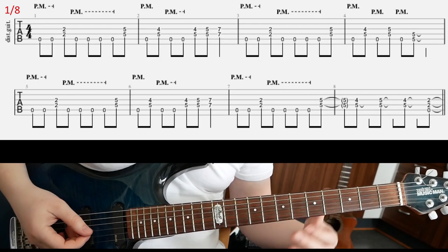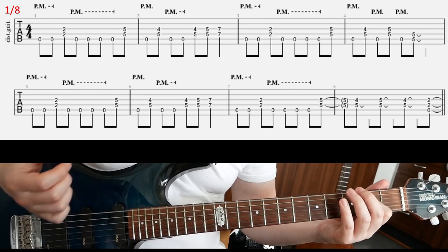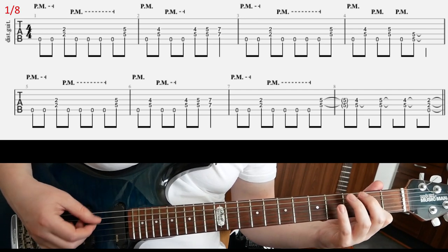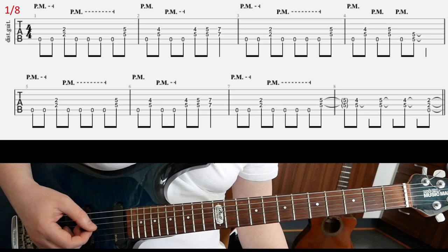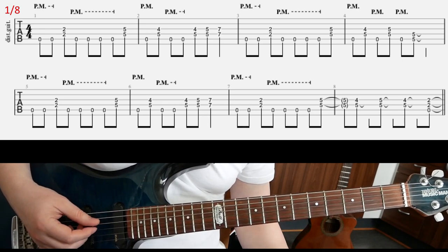All right, so now let's have a look at Heading Out to the Highway by Judas Priest. The song goes in A by the way. It's very classic, really good riff, not too complicated either, and it goes like this.